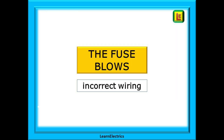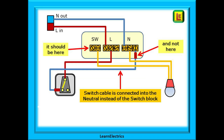This next one — the fuse blows — is often the result of incorrect wiring. You will come across this in a work day situation, but not many assessors will deliberately put this as a live fault because of the excessive currents that flow. The switch cable coming from the switch and going back to the ceiling rose has not been terminated into the switch block; whoever's done it has terminated it into the neutral block. The result is that every time the switch is turned on there is a direct short across line and neutral — the fuse will blow, the breaker will trip. This is often a result of a lack of knowledge, the person assuming that all blue wires are neutrals. This is why electricians mark the ends of the switch cable with brown sleeving as an indicator that this is not a neutral conductor.